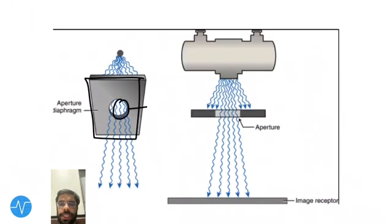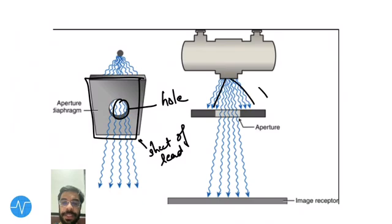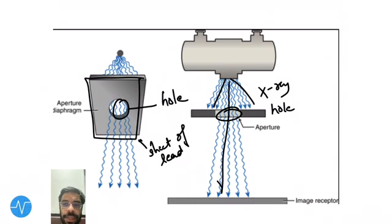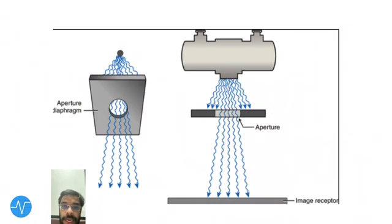Looking at the diagram: there is a sheet of lead with a hole. X-rays produced from the glass tube hit the beam restricting device, and only those x-rays aligned with the hole will pass through. This regulates and restricts the shape of the x-ray beam.